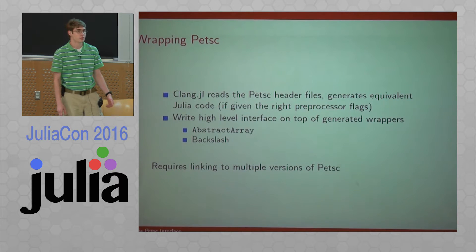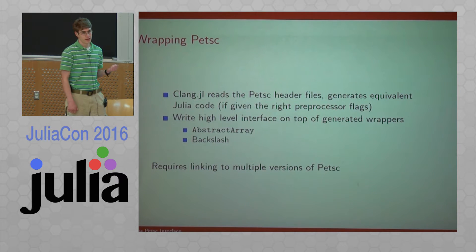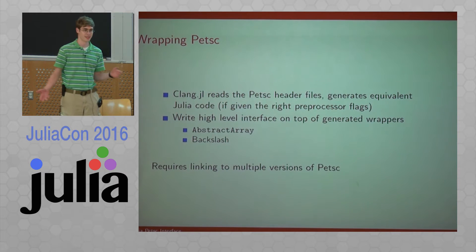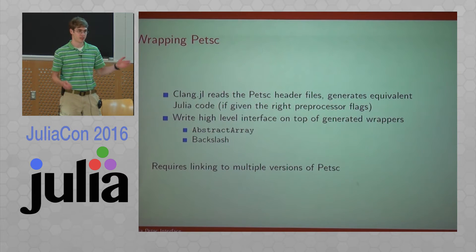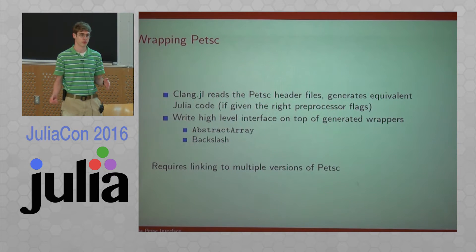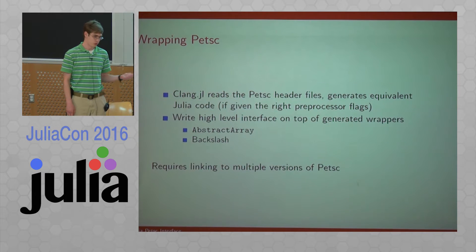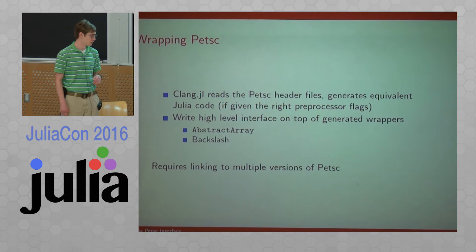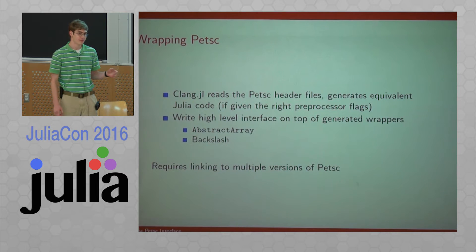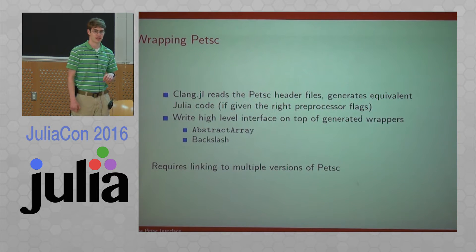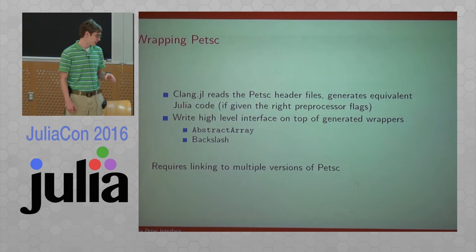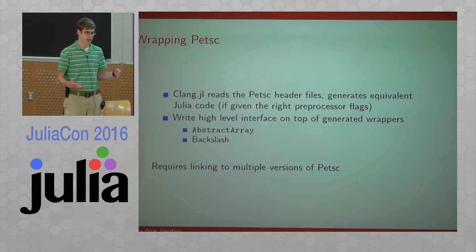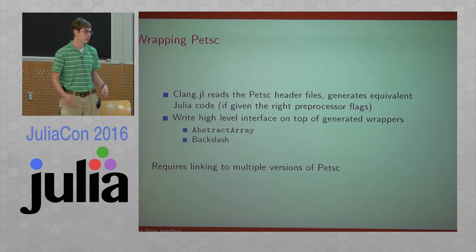Wrapping PETSc comes in two parts. The first uses Clang.jl to parse all the PETSc header files and transliterate C statements into Julia statements — very much a one-to-one mapping where a typedef becomes a type alias and a pointer to a double becomes a pointer to a float64. You have to pass all the right preprocessor flags so it finds all the right code, because PETSc uses lots of defines to include or not include things. The second part is writing a high-level interface on top of the low-level interface, to connect Julia abstractions to PETSc abstractions — things like abstract array and backslash.